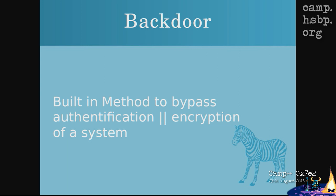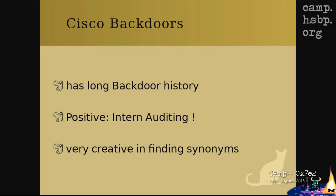Let's start with the first security vulnerability. Cisco makes network equipment and has a long backdoor history in their systems. The positive thing is they are now doing internal auditing, checking their software, and finding backdoors and other bugs. Sometimes these were left in during development and not removed after product release. It's not ideal, but they are actively doing something about it.